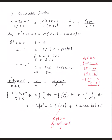We can still use each factor as the denominator for smaller fractions once we decompose. x gets its own fraction, and x squared plus 1 gets its own fraction. Because the second denominator is quadratic, you have to build a linear numerator — a linear denominator gets a constant numerator, while a quadratic denominator gets a linear numerator with an x term and a constant term.